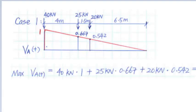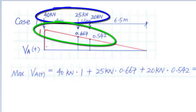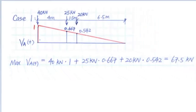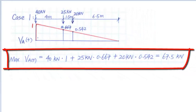Then we can get the maximum shear at point A by summing the product of the value on the influence line and the corresponding axle load, which equals 40 kN × 1 + 25 kN × 0.667 + 20 kN × 0.542 = 67.5 kN.